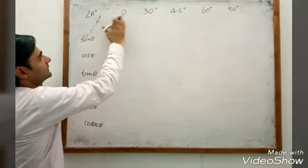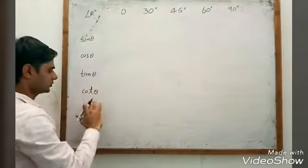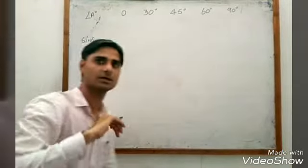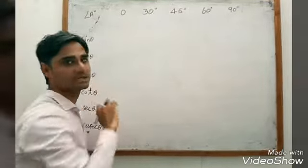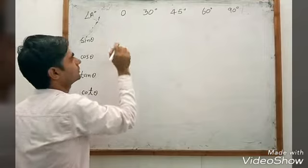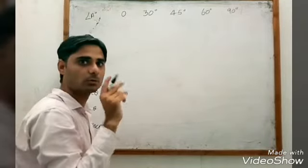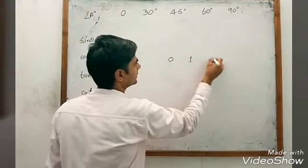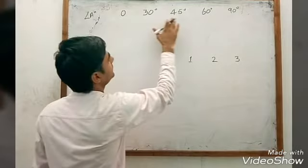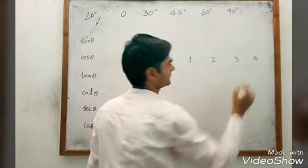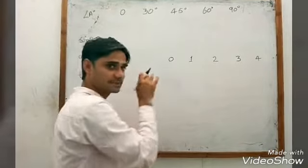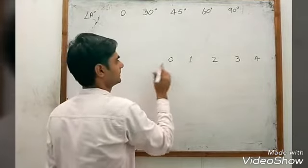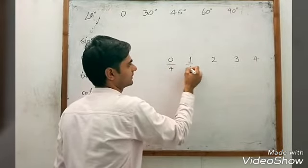These are the angles: sin θ, cos θ, tan, cot, sec, and cosec at 0°, 30°, 45°, 60°, and 90°. We want to find the values of these trigonometric functions at these degrees. Let me show you an easy way to make this table. First, write 0, 1, 2, 3, 4.